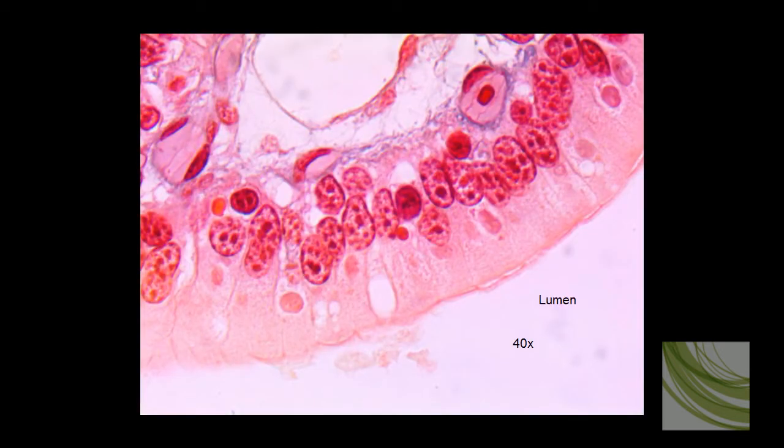Here is the same slide using the 40X objective. There's the lumen, this space. This is just part of a little villi. We can see nuclei in the cells, and we can see a goblet cell. This would be the basement membrane.